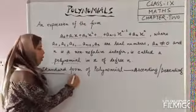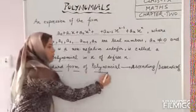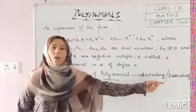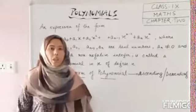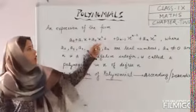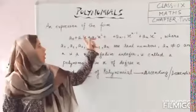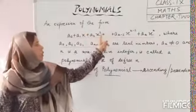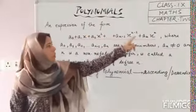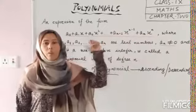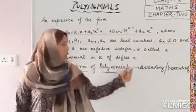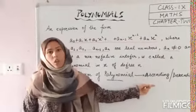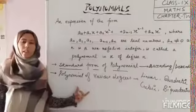The standard form of polynomials: you will write the expression either in ascending order or in descending order. For example, in this expression the powers go 1, 2, 3 — it is written in ascending order. You can write it in either ascending order or descending order.